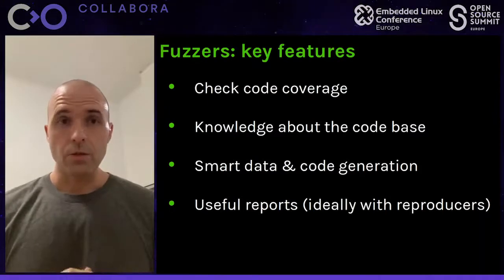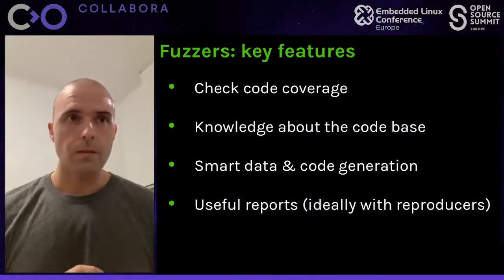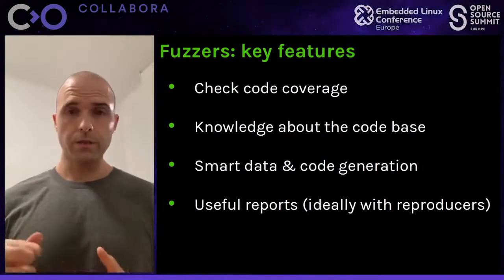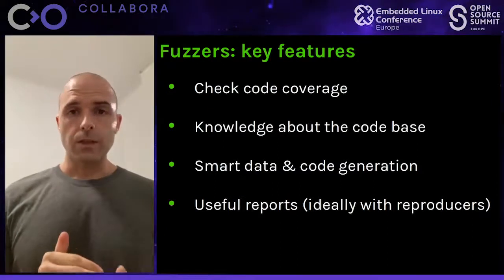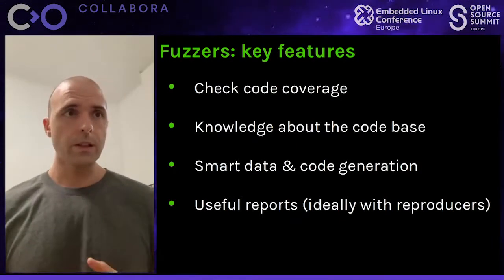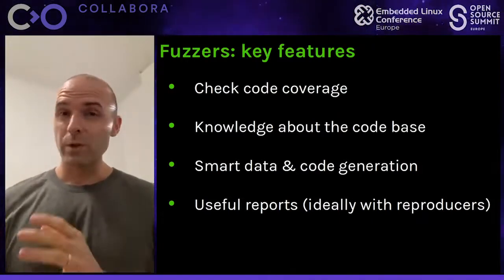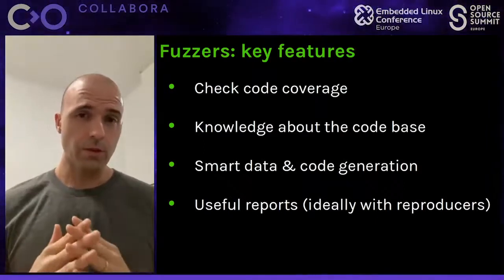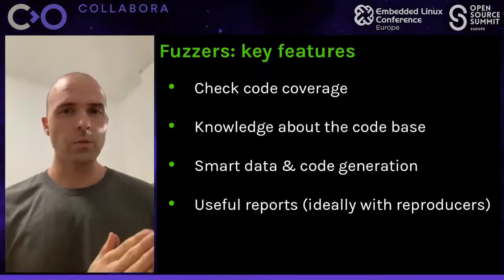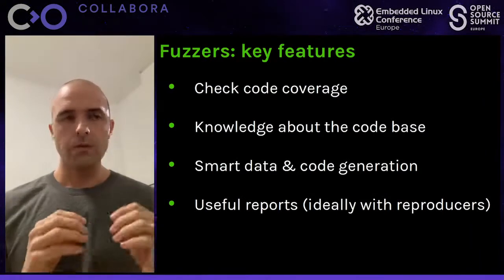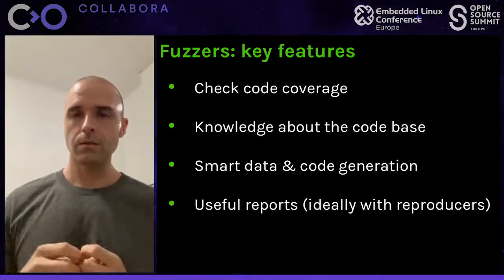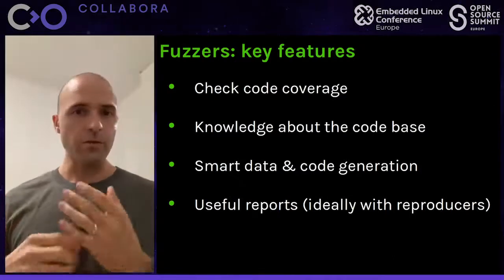We also want some way of getting information about the source code so that the fuzzer can generate test programs more efficiently. It's also good to have the capacity to generate data inputs and code sequences in a random but smart way, because we want both things — we don't want something that looks like a manually written test, but we don't want a completely random test either. And of course, having good report generation is also important, because when the fuzzer finds a bug, it's good to know there's a bug, but we would also like to have some information about how to reproduce it.